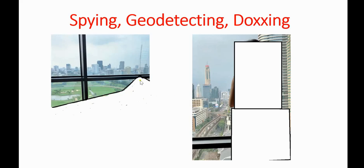If we look here we can see this is a golf course, and here there's a very tall building that should be easy to find. Here is a round building, and this looks like a monorail, so it shouldn't be too difficult.